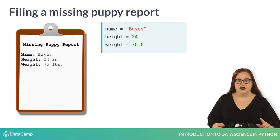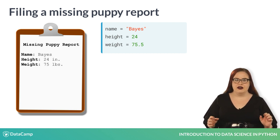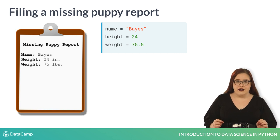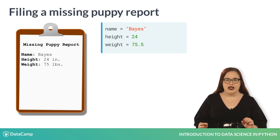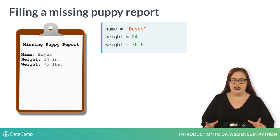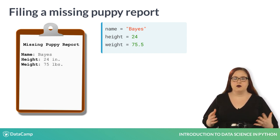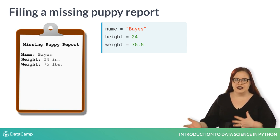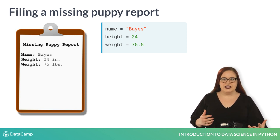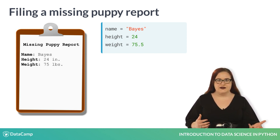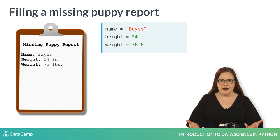In Python, we will represent each line from the missing puppy report with a variable. A variable gives us an easy-to-use shortcut to a piece of data. Whenever we use the variable name in our code, it will be replaced with the original piece of data. In this case, one of our variables is name, and its value is Bayes.